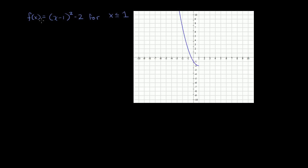We have the function f(x) = (x - 1)² - 2, and they've constrained the domain to x ≤ 1. So we have the left half of a parabola, constrained so that it's not a full U-shaped parabola. I'll let you think about why that would make finding the inverse difficult.